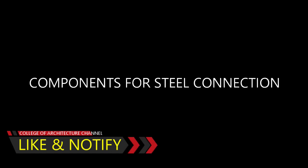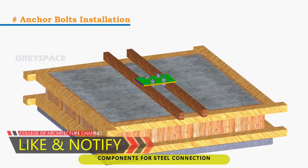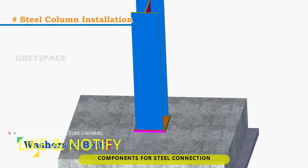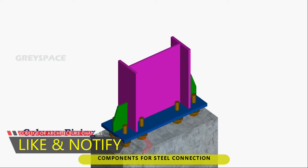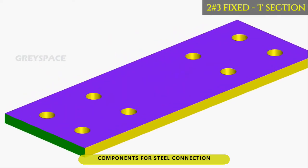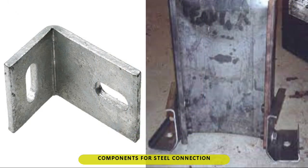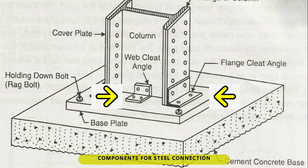Components for steel connections. 1. Anchor bolts: bolts embedded on a column foundation that receives the base plate of a steel column. 2. Base plate: a metal plate bolted on top of a foundation, wherein the bottom end of a steel column is welded. 3. Angle cleat: a small angle bar attached to the bottom end of a web or flange of a steel column, connecting to the base plate.